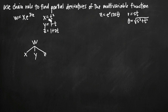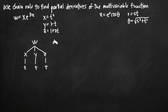Over here on the right you've got an equation for x, y, and z, and each one is in terms of t. So x is in terms of t, y is in terms of t, and z is in terms of t. What this tree diagram shows you is dependent variables on the top, intermediate variables in the middle, and independent variables on the bottom. Because we only have one independent variable here, this is a case 1 type multivariable function.